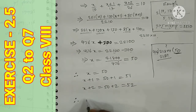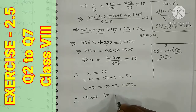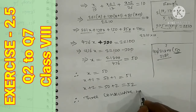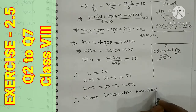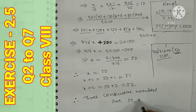Therefore the three consecutive numbers are 50, 51, and 52. This is the answer.